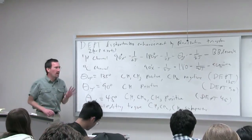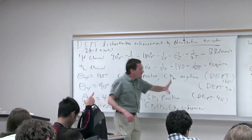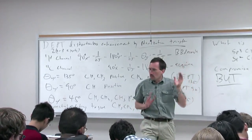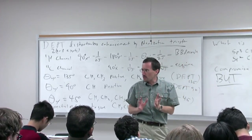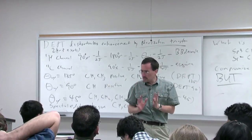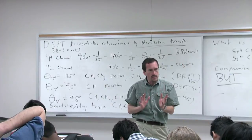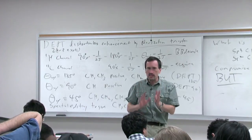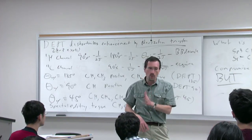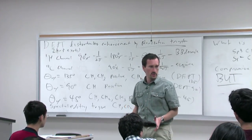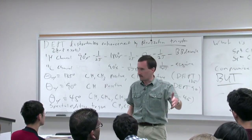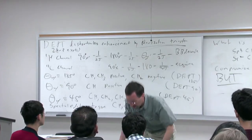The main take-home message is that in all of these pulse sequences you're making choices about delays that are based on coupling constants, and those choices are always compromises and estimates. If those choices don't match your molecule, you will get confusing results. Always be careful in interpreting your spectra, and when you're collecting your spectra pay attention to those parameters that Phil talks about, because they actually have meaning.